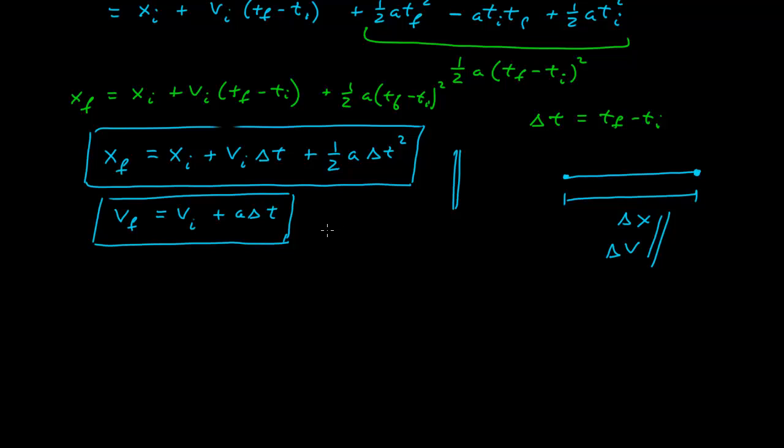And I can do that because I can solve this one for delta t. Delta t equals vf minus vi over a. Substitute that into this and come up with a new expression. If I do that, I find I can derive that vf squared equals vi squared plus 2a xf minus xi.